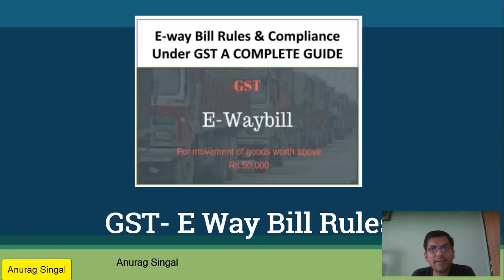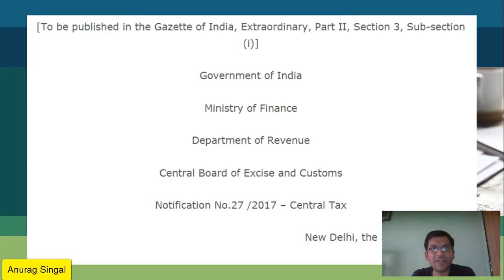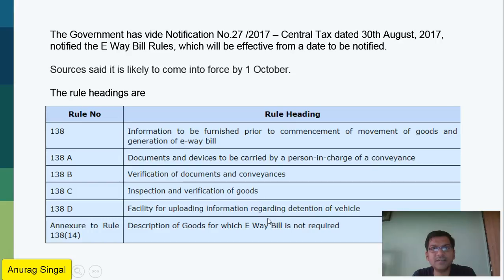Now 30 August, the Government has notified GST e-way bill rules. These draft rules have been opened for industry feedback, and based on this the final rules will be notified. This is a notification from the Government of India, Ministry of Finance, Department of Revenue, CBIC — notification 27/2017 — which notifies the e-way bill rules, effective from a date to be notified.